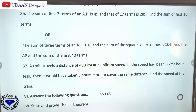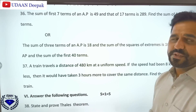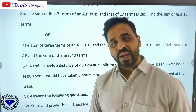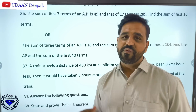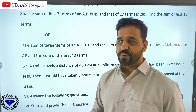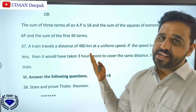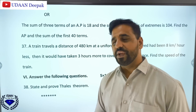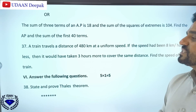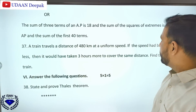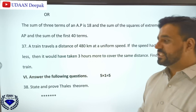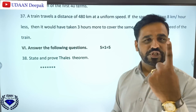For the four-mark section: solve a pair of linear equations graphically. Show that points (1,7), (4,2), (-1,-1), (-4,4) are vertices of a square using six distance calculations. The sum of first 7 terms of an AP is 49 and sum of first 17 terms is 289 — find the sum of first 10 terms. The sum of 3 numbers in AP is 24 and sum of squares of extremes is 104 — find the AP and sum of first 14 terms. A train covers 480 km at uniform speed; if speed were 8 km/h less it would take 3 hours more — find the speed.